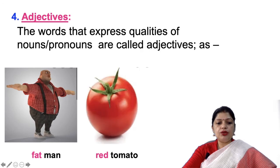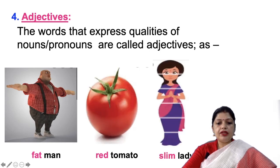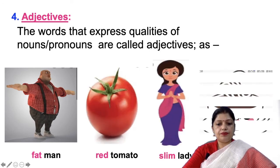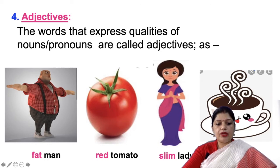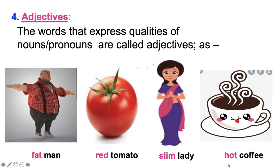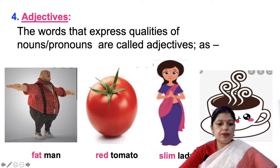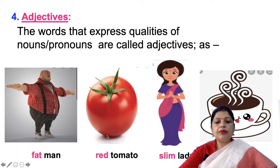For example: fat man, red tomato, slim lady, hot coffee. In 'fat man,' fat is the adjective. In 'red tomato,' red is the adjective. In 'slim lady,' slim is the adjective. And in 'hot coffee,' hot is the adjective — because fat, red, slim, and hot are expressing the qualities of these nouns.